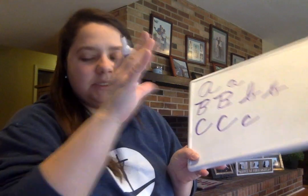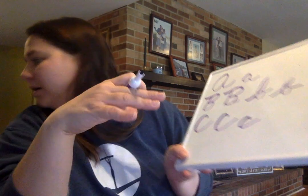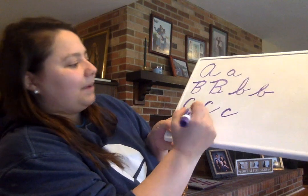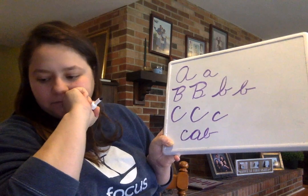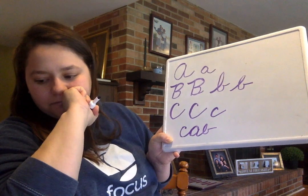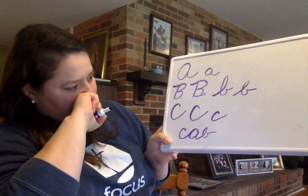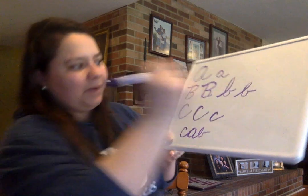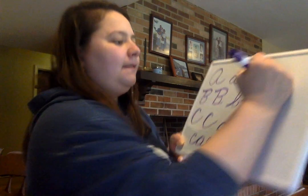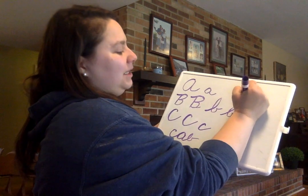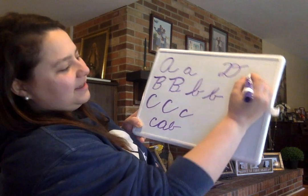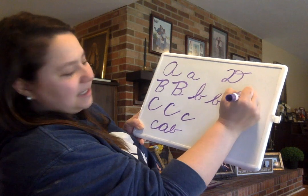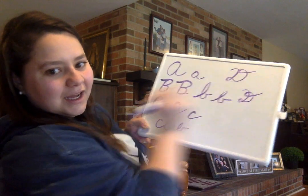And as we put together words, I can also review a little bit more what we are doing. So if I wanted to write the word 'cab,' I would do C, A, B. And we're going to go to D. Remember that little 2 when we go up — like this. Down, 2, up.